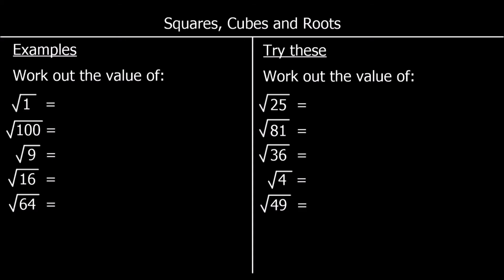The opposite of squaring a number is called square rooting. When we square root a number, we're looking for the number that multiplies itself to make that number. This is the square root symbol. The square root of 1 means what number times itself makes 1. 1 times 1 makes 1, so the square root of 1 is 1.